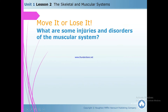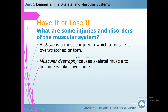Next — move it or lose it. What are some injuries and disorders of the muscular system? Before, when I was talking about joints and bones, I mentioned four things: fracture, sprain, osteoporosis, and arthritis. That was about bones. Now let's discuss muscles.